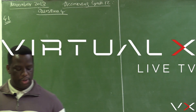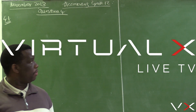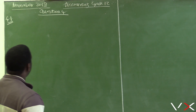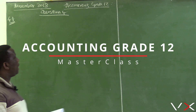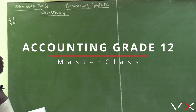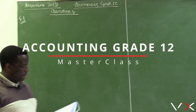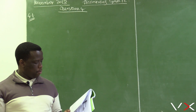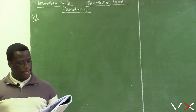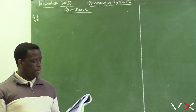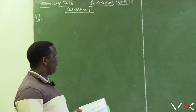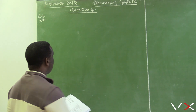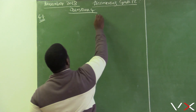We are now doing Question 4, from the November 2018 Accounting Grade 12 paper. Question 4 is on the cash flow statement and interpretation, and this question is worth 70 marks.